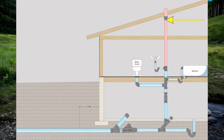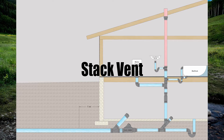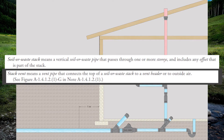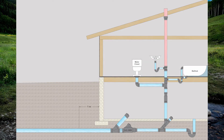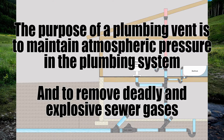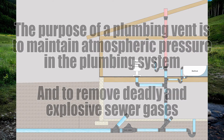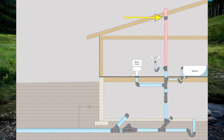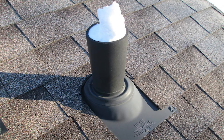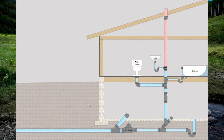The top of the soil or waste stack is right here, and then there's a red pipe that extends up through the roof. The top of every soil or waste stack must have a stack vent — that is what the red pipe is. Stack vent means a vent pipe that connects the top of a soil or waste stack to a vent header or to outside air. The purpose of a vent in a plumbing system is to maintain atmospheric pressure throughout the entire drainage system and to remove sewer gases, which can be poisonous or explosive. You'll notice the pipe size increases before passing through the roof — this is to prevent frost closure on cold winter days, which we'll cover in another video.